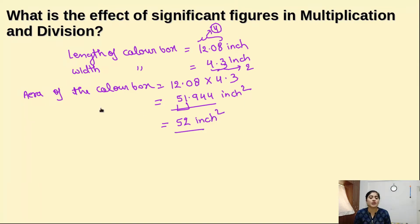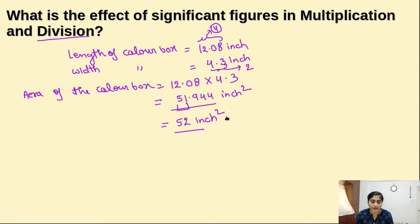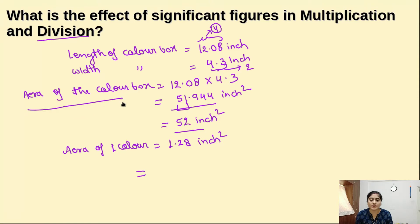So 52 inch square is the area of the color box. Now if we look at division — suppose we know the area of the color box and we want to find how many single colors fit inside it. Suppose the area of one single color is 1.28 inch square. We need to divide the box area by the single color area to find how many colors fit.